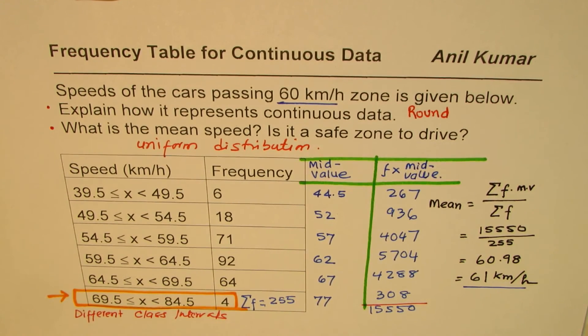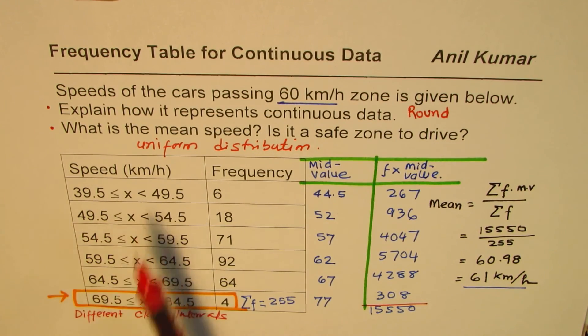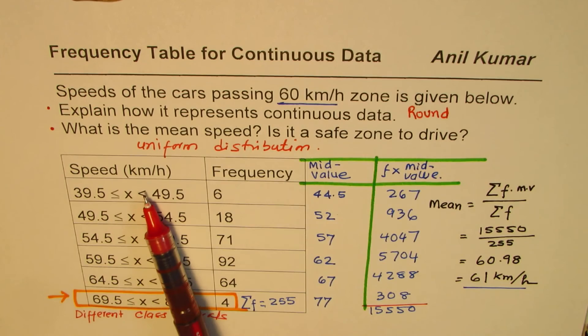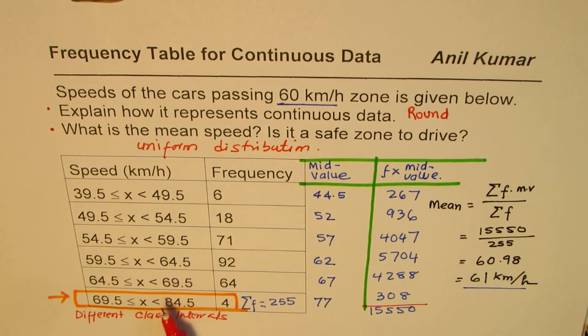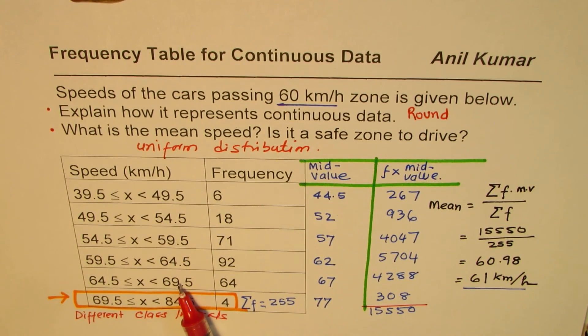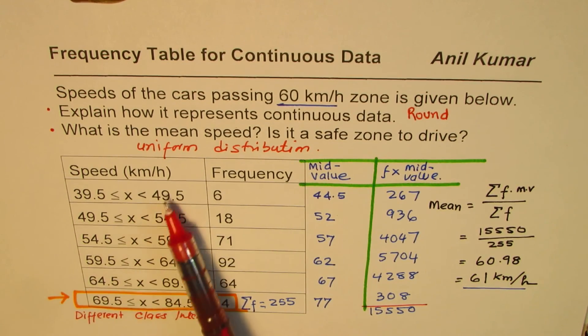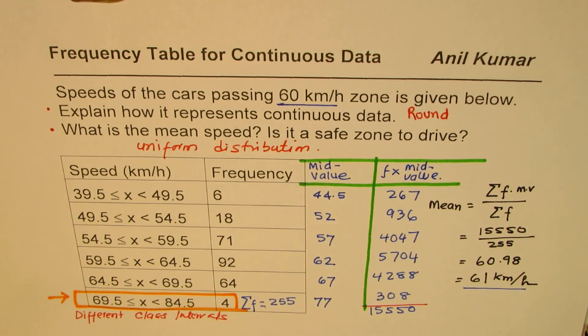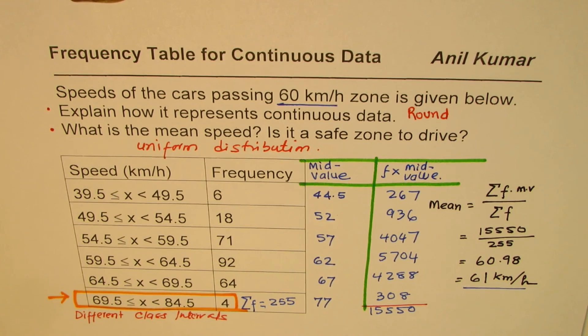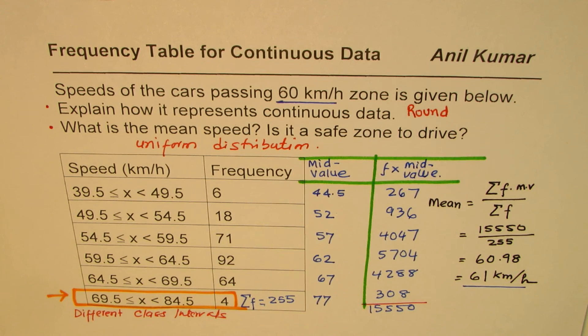Let me remind you: whenever you have continuous data, we'll have intervals where the upper boundary becomes the lower boundary, and one is not included, normally the upper one. You also notice sometimes we'll have different class intervals, as in this case where the center portion has interval of 5 and different intervals for the first and last portions. Remember, whenever you want to find mean for grouped data, whether discrete or continuous, we use the middle value, multiply it with the frequency, and then find the mean. This is Anil Kumar and I hope that helps. Thank you and all the best.